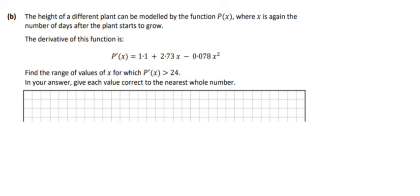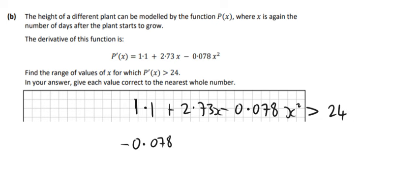Right, here then we're just finding the range of values for which all of that function is greater than 24. So 1.1 plus 2.73x minus 0.078 x squared is greater than 24. We put everything on one side, so minus 0.078 x squared plus 2.73x, and then if I bring over the 24 and subtract it on the left hand side I would get minus 22.9, greater than zero.